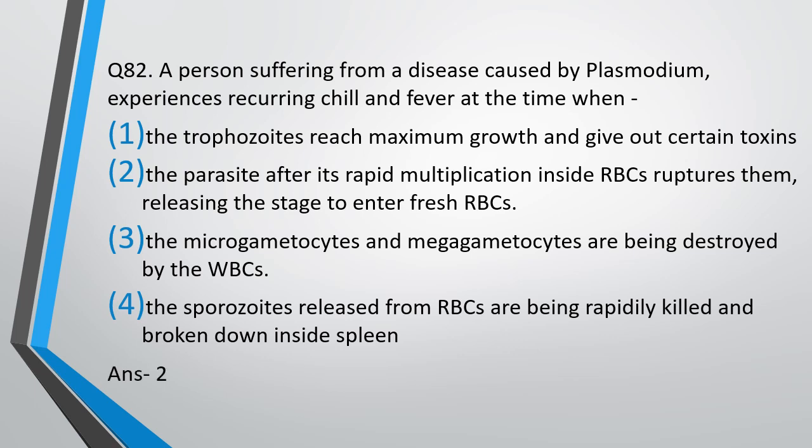A person suffering from disease caused by Plasmodium experiences recurring chills and fever at the time when — the correct answer is option 2 — when the parasite, after its rapid multiplication inside RBC, ruptures them, releasing the stage to enter fresh RBCs. So whenever the RBCs are ruptured, the chills and fever occur.